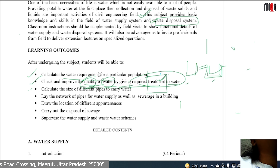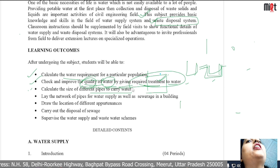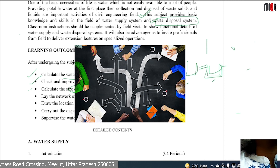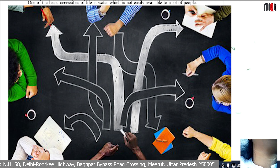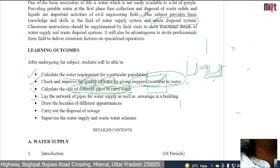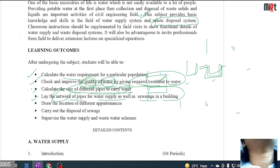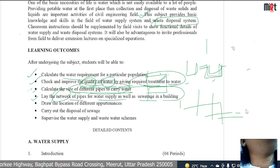The third point we will read about is calculating the size of different pipes to carry the water in the water supply system. We will study the different types of pipes, their diameter, and the flow through them. We will also lay out the network of pipes for water supply as well as sewage in a building, and see how to design the pipe network to reach water to the people.